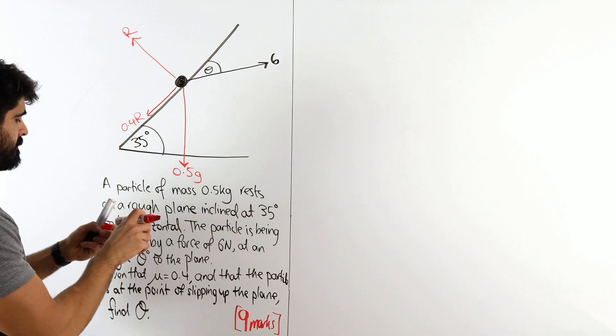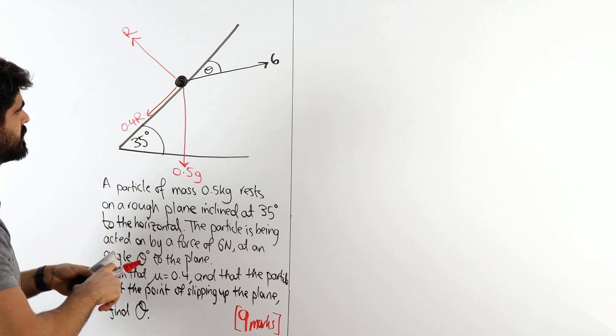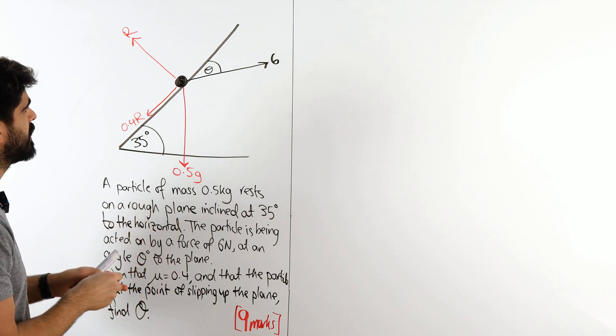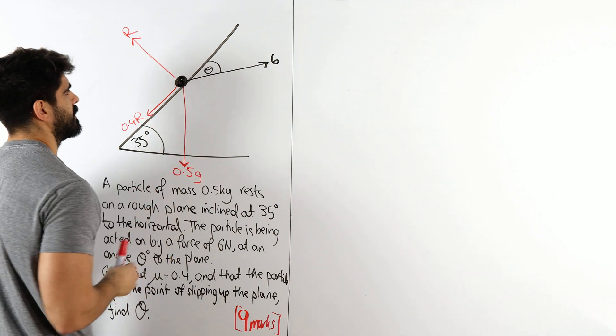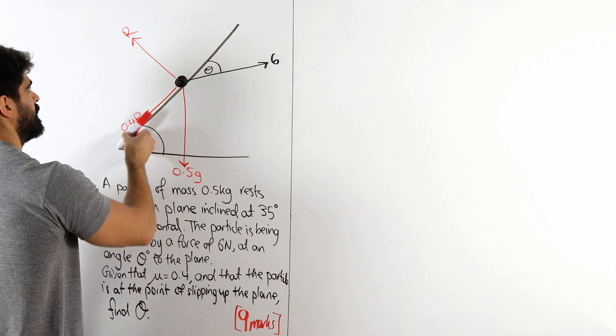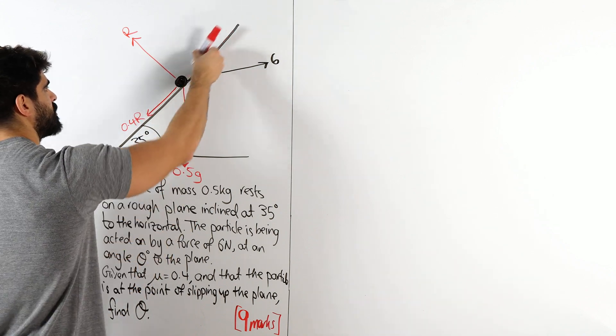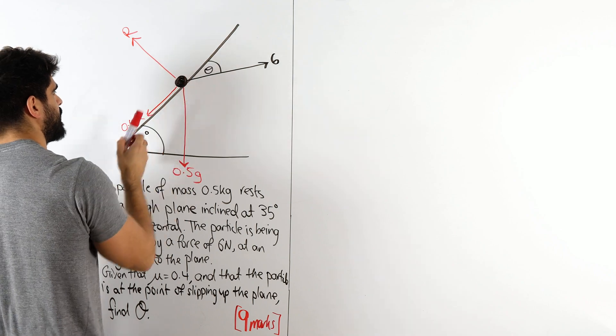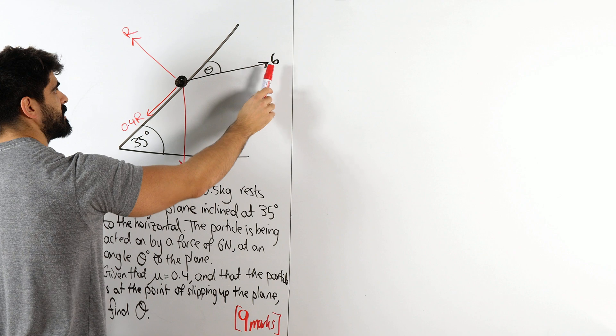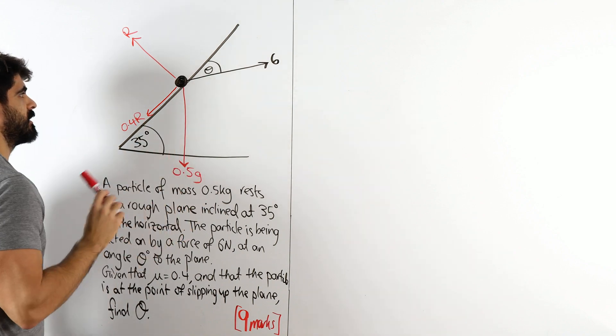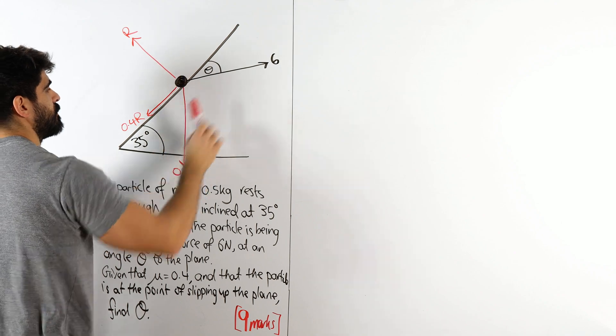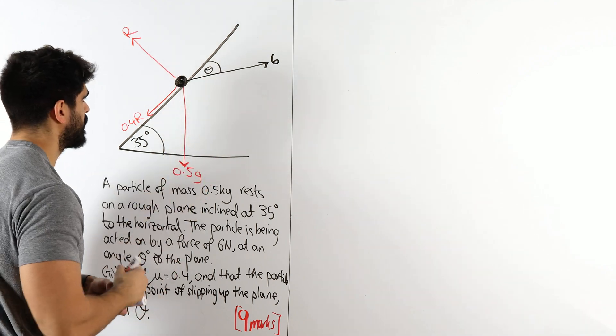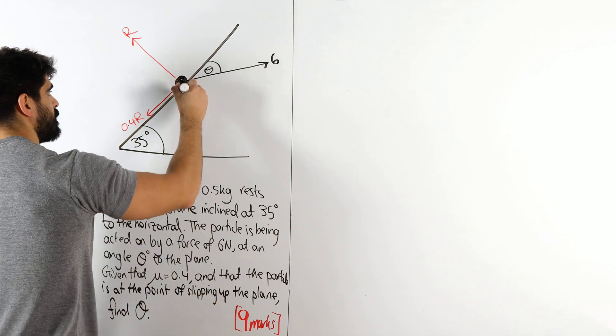Find theta. Now the next thing we need to do is we need to resolve all forces so that they are pointing parallel and perpendicular to the plane. So we're looking, which things are not pointing parallel to the plane, it's the 0.5g and the six. That 0.4r is perpendicular to the plane, the r is fine. But again, these two forces, it's not looking good.